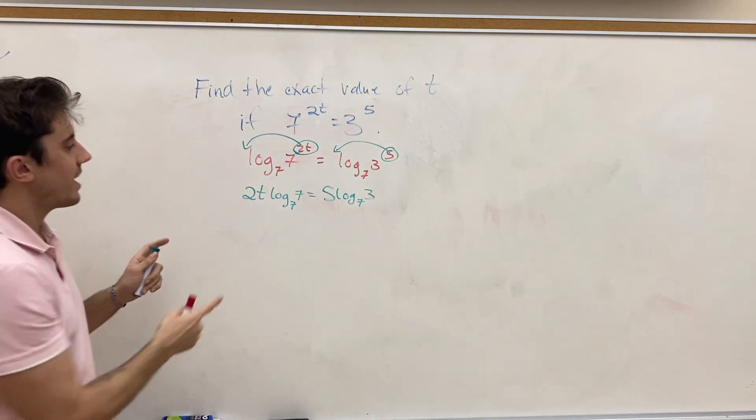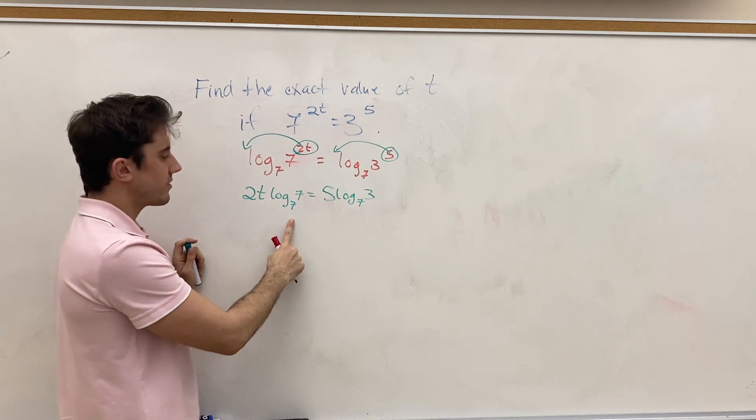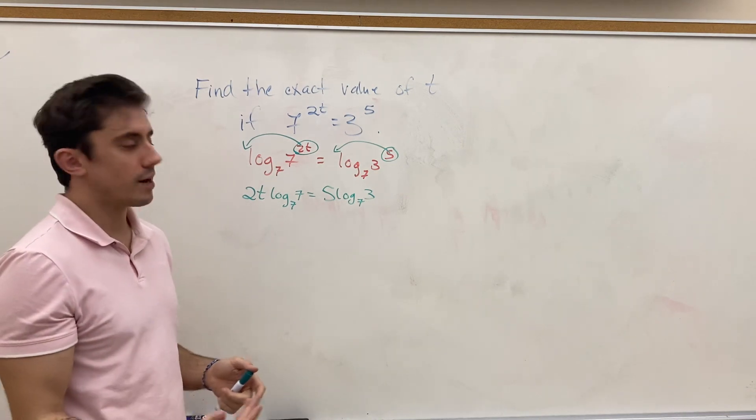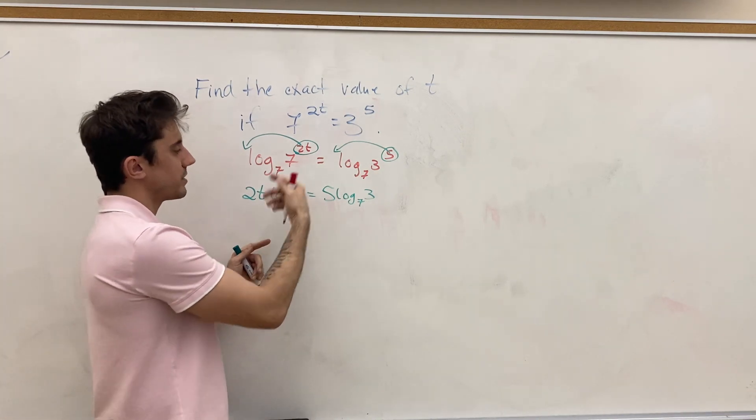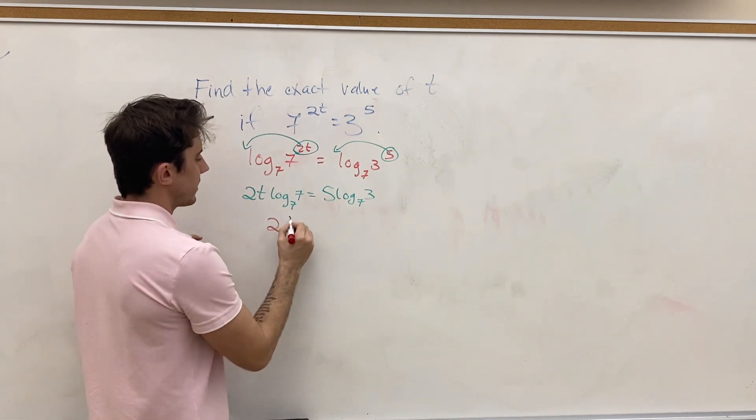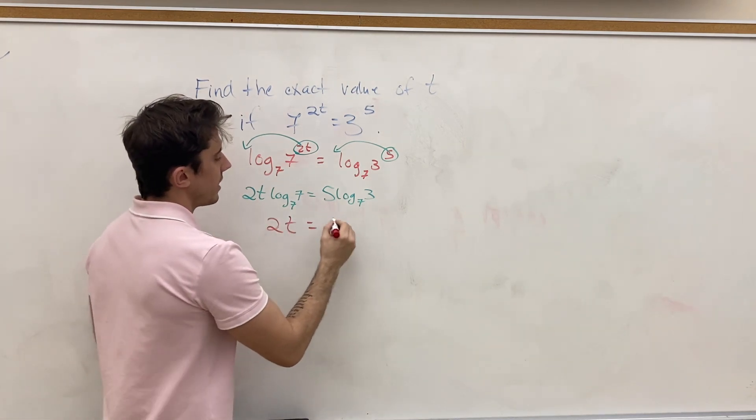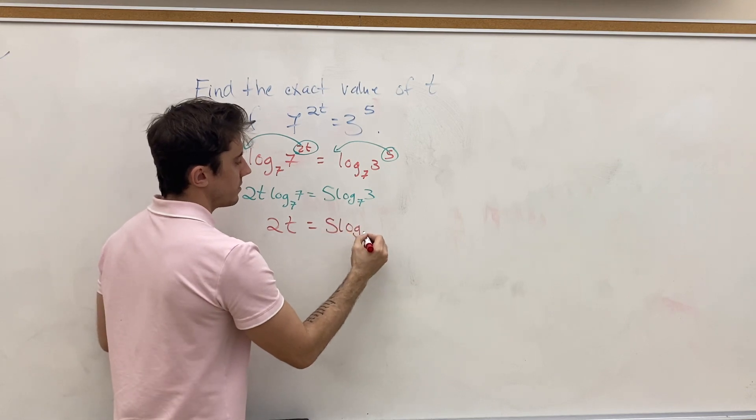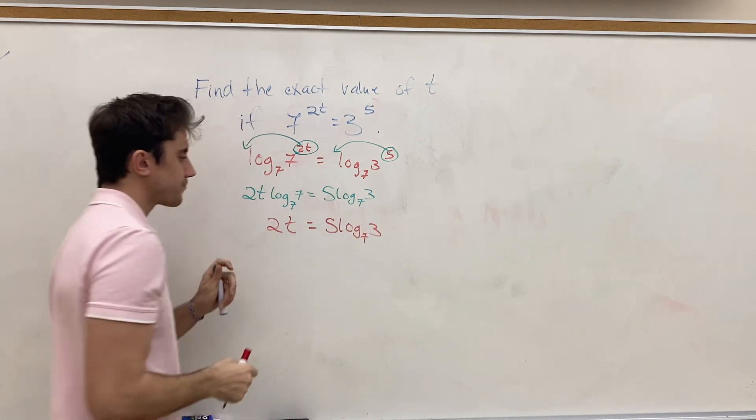And we know that log base 7 of 7 asks the question, what must 7 be raised to the power to become 7? Obviously, the answer to that is just 1. So, this left-hand side just becomes 2t, and that's equal to 5 log base 7 of 3.